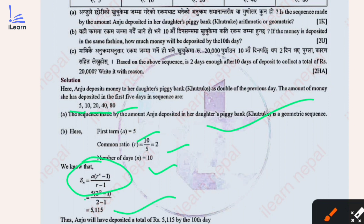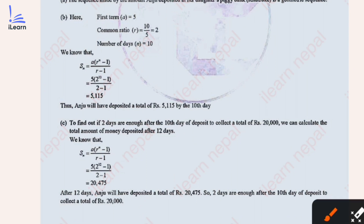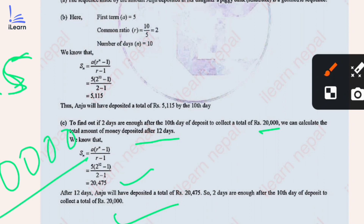To find out if two days are enough after the 10th day of deposit to collect the total Rs 20,000, we calculate the total amount deposited after 12 days. The result is Rs 20,475. After 12 days Anuj will have deposited a total of Rs 20,475, so two days are enough after the 10th day of deposit to collect the total of Rs 20,000.